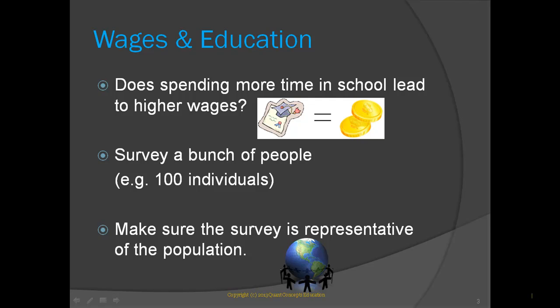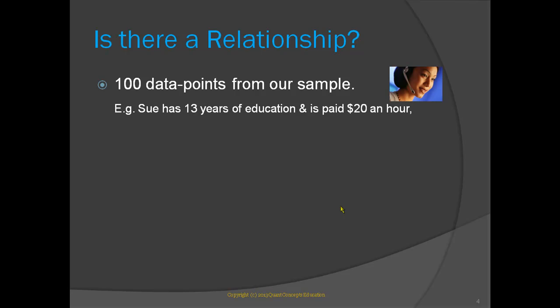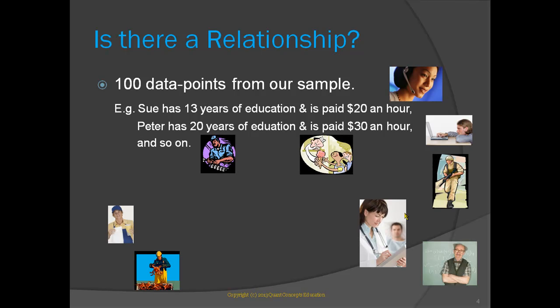Each individual's response will produce a data point. That is, our random sample of 100 individuals will produce 100 data points for us to estimate our regression. For example, our first data point is Sue. She has 13 years of education and is currently paid $20 an hour. Our second data point is Peter, with 20 years of education and an hourly wage of $30. And so on for the other 98 individuals in our sample.